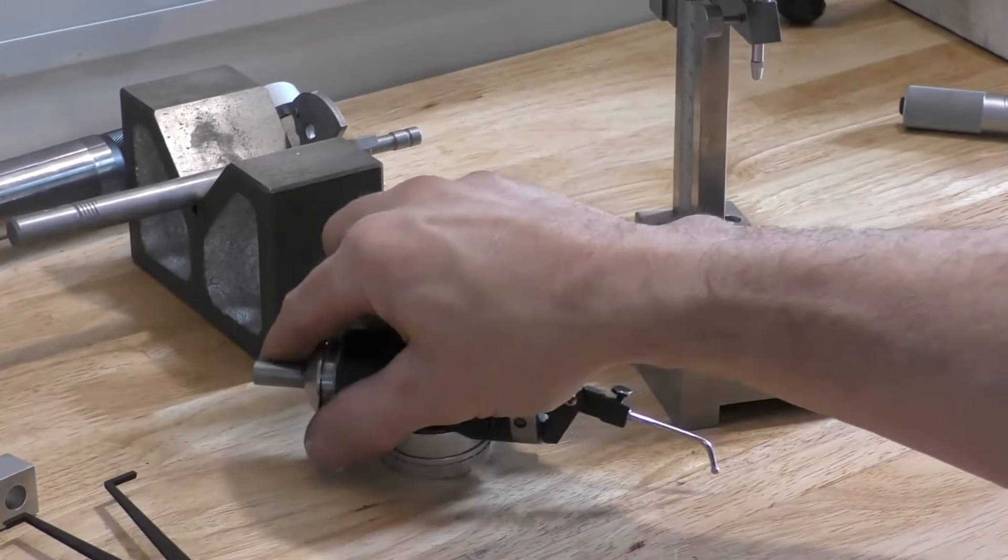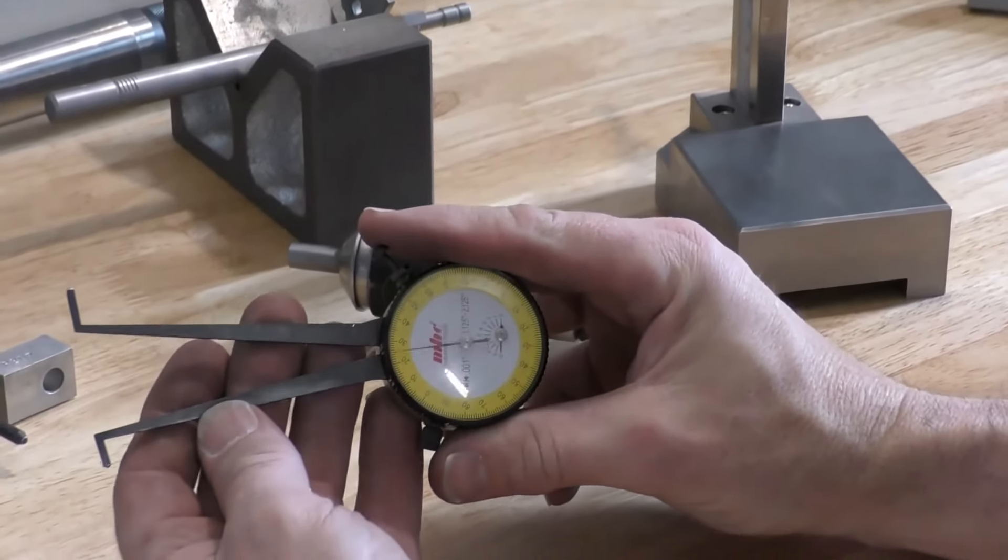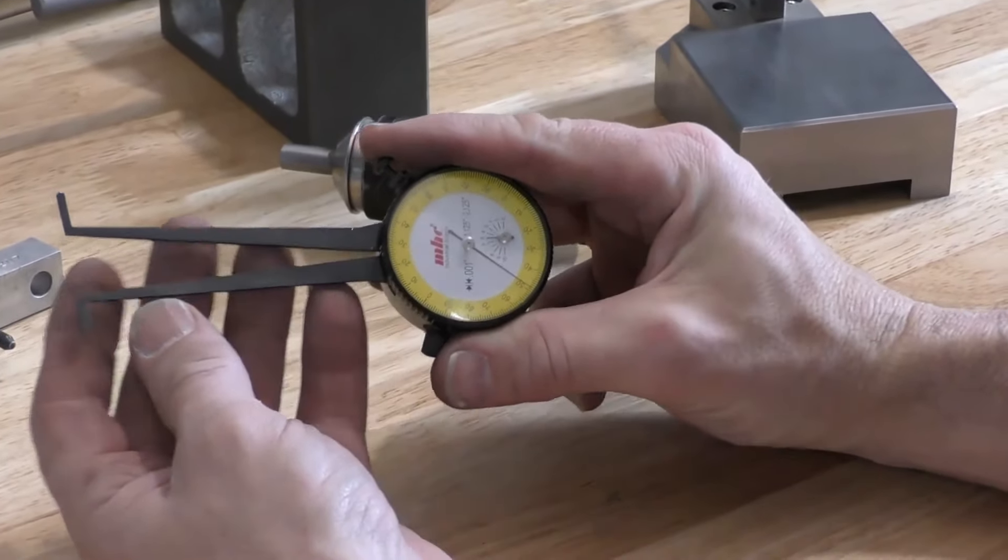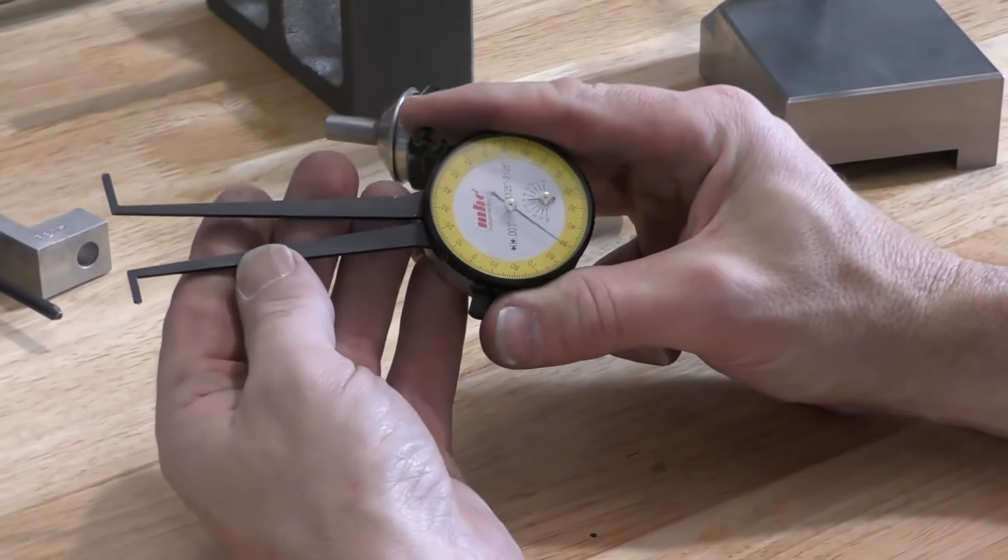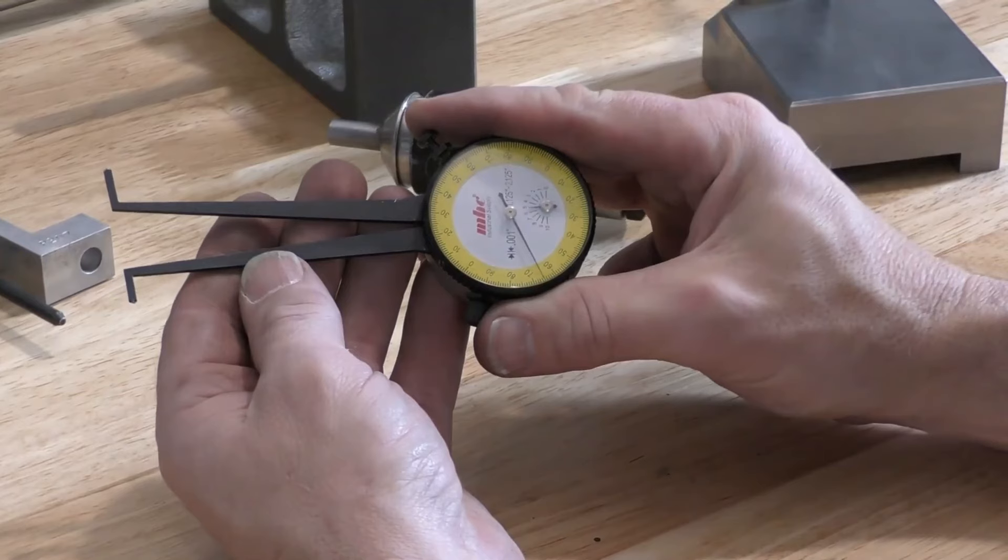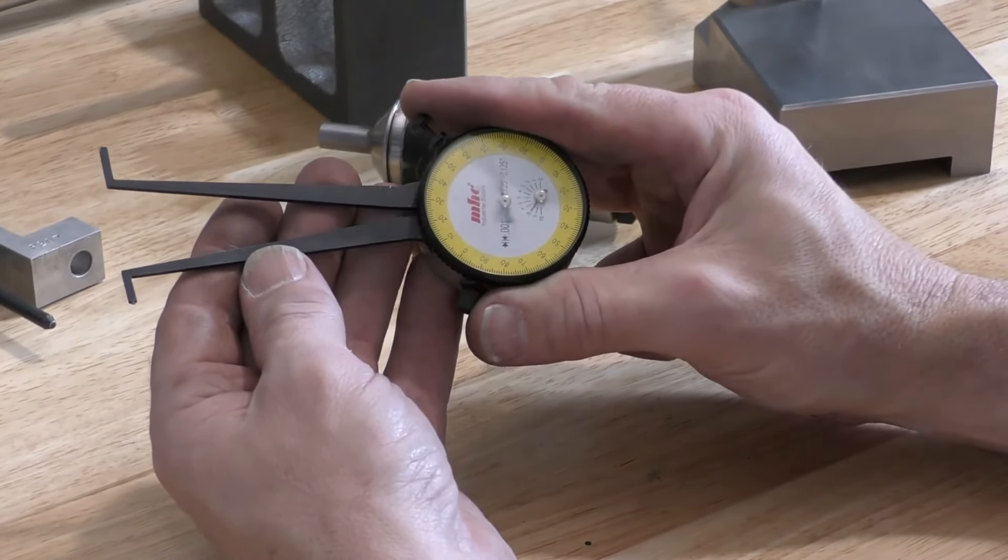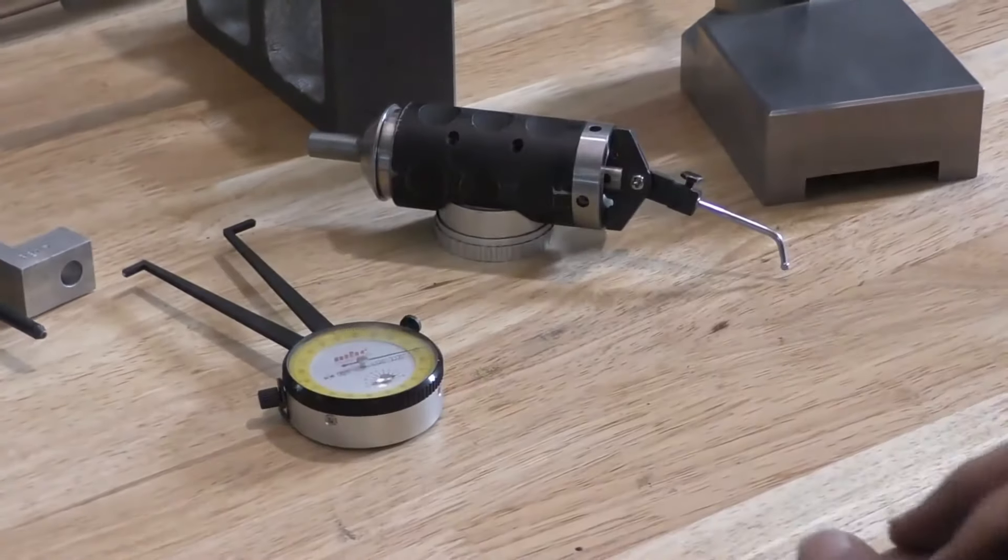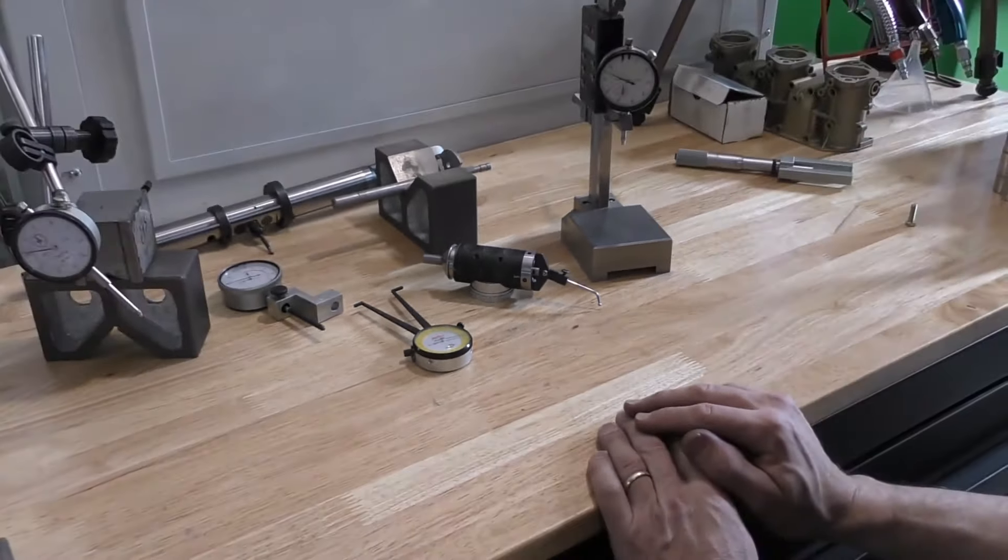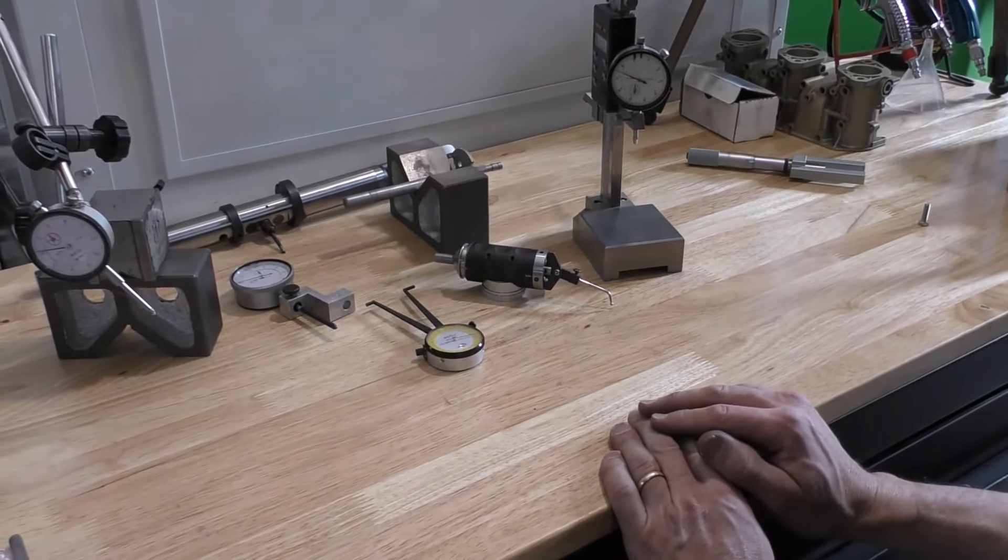This type of dial gauge is designed for measuring holes. Once again you would use a mandrel or you can set this using a micrometer with a known distance, and then you could install it into a bore and measure for differences in bore size. So there's a lot of different uses for a dial gauge. It takes a little bit of practice to use and to get them set up the first time, but all in all they're fairly easy to operate.